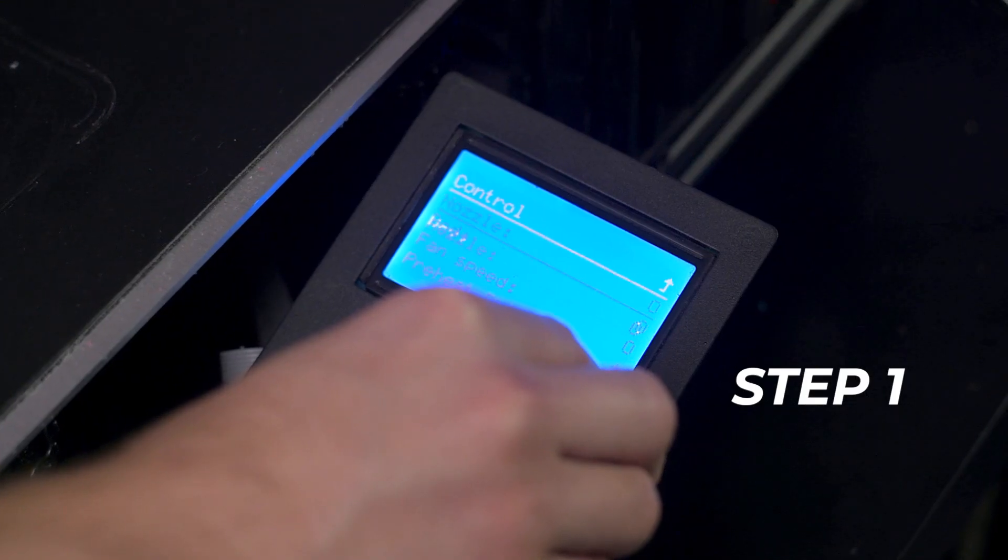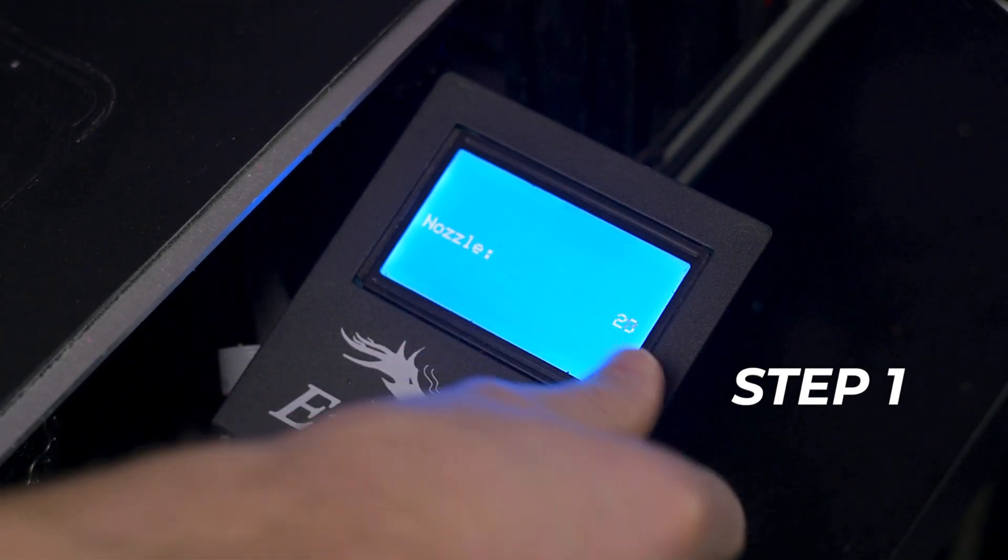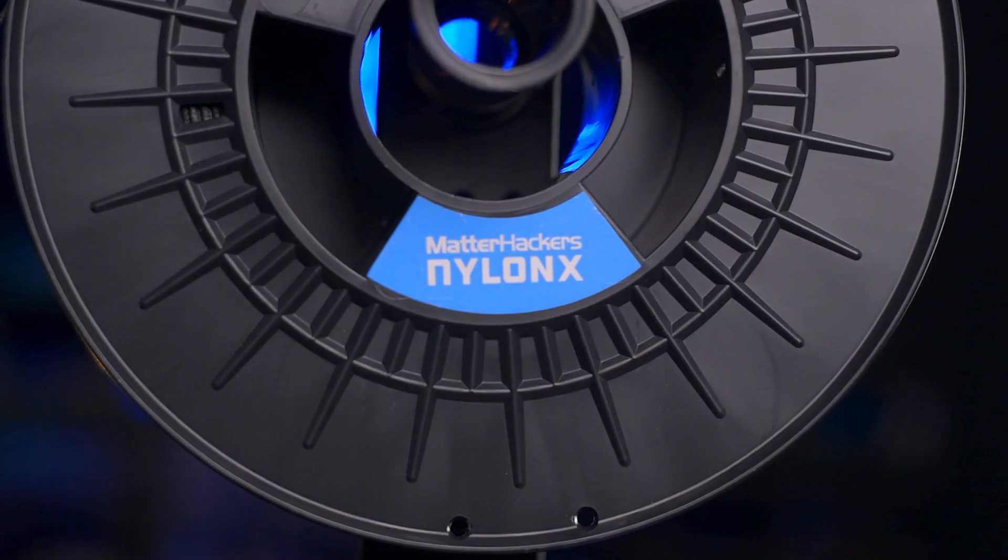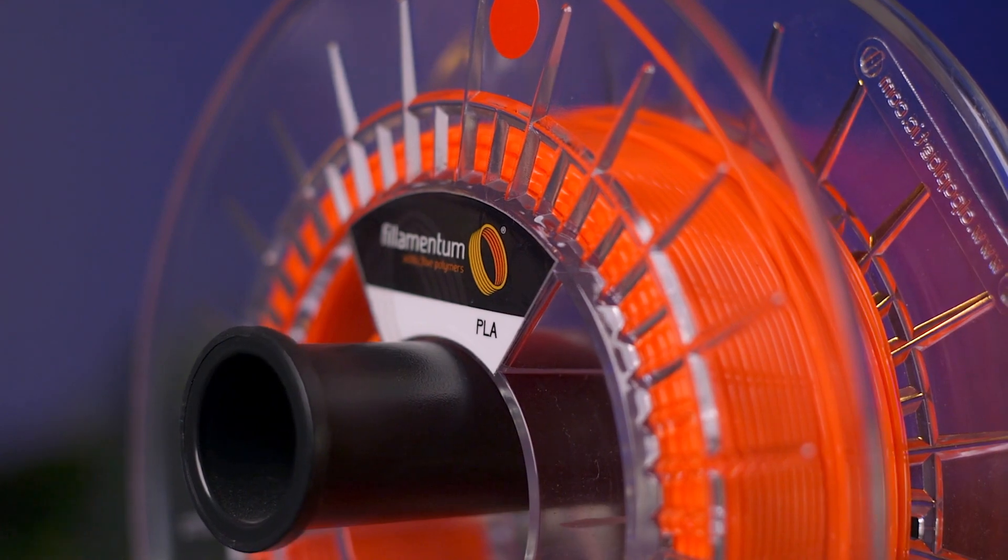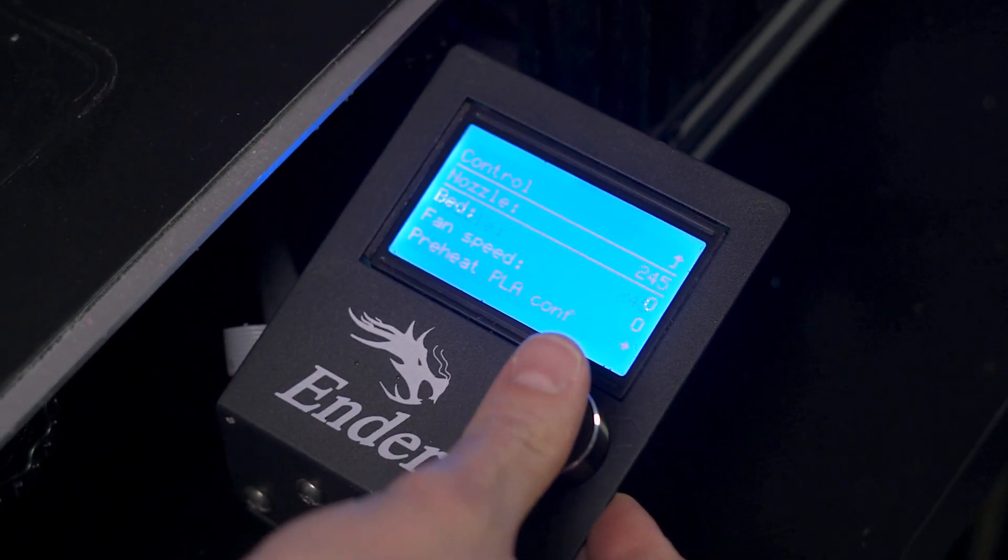Loading filament into a 3D printer is almost identical to unloading with a few easy caveats. Step 1: Preheat the nozzle to the higher temperature between the material you are changing to or the material you are changing from. If you previously printed with Nylon X and are changing to PLA, preheat to the printing temperature of Nylon X to make sure it is completely purged from the nozzle.